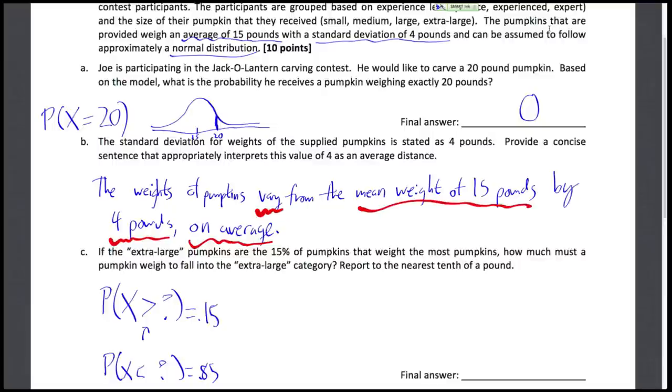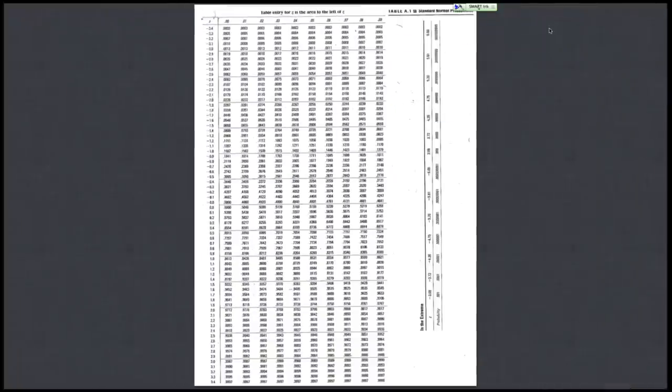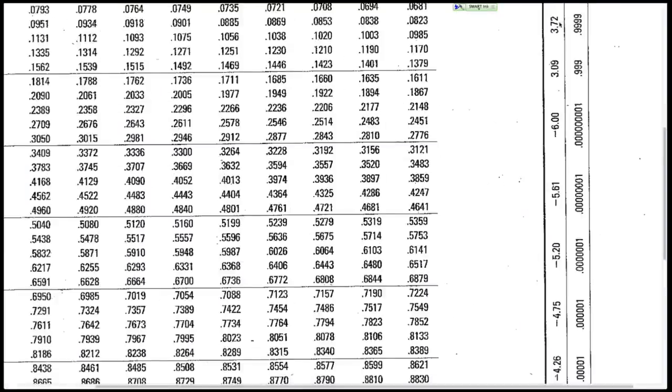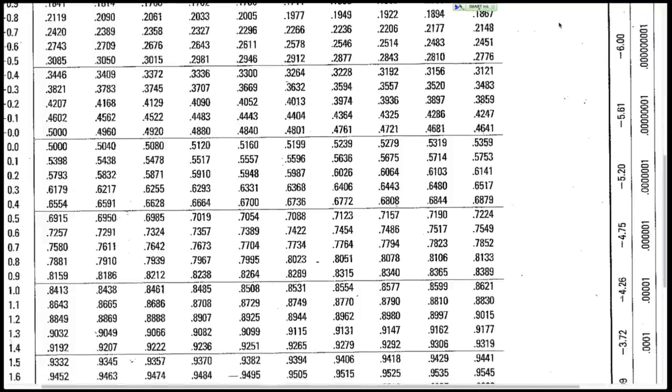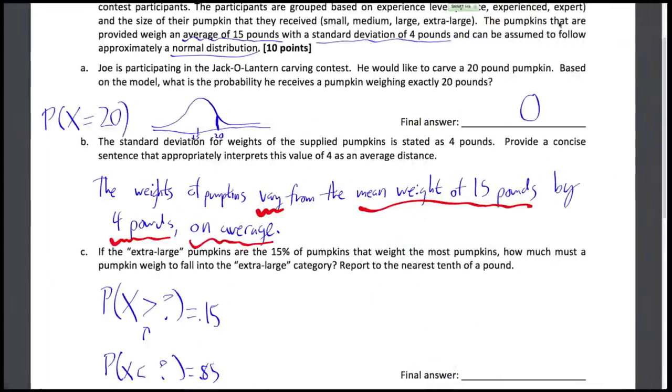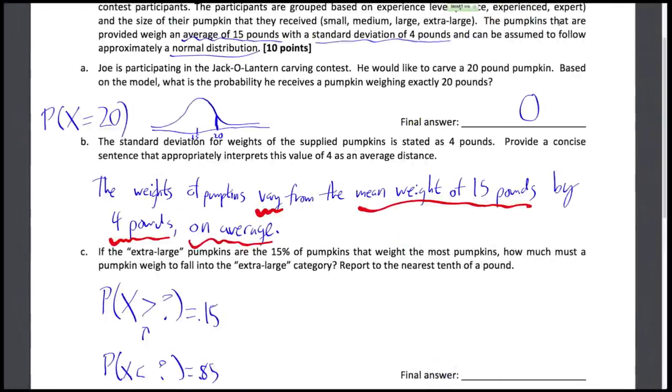So let's find where 0.85 is in our normal table. So let's do some zooming in here. So in the table, the closest value I can find to 0.85 is, looks like 1.04. Yeah, right here. That's as close to 0.85 as we can get. And that corresponds to 1.04 on the table, because this is the 1.0 row. And we're over to the fourth one. So back here, that means that we're associated with the Z score of 1.04.